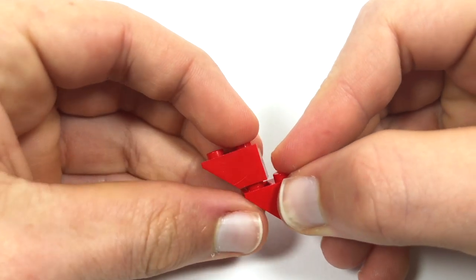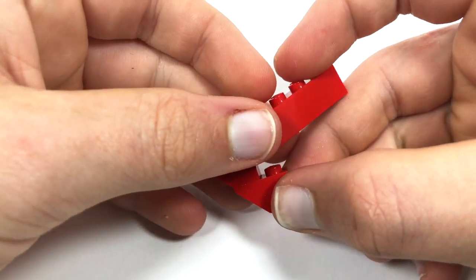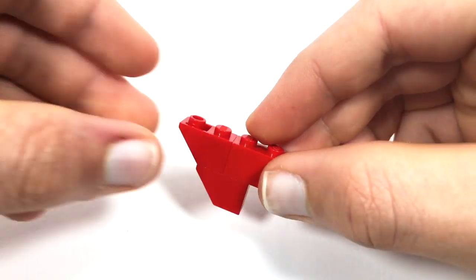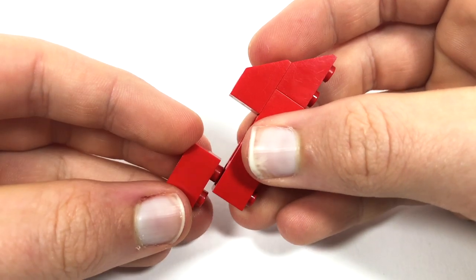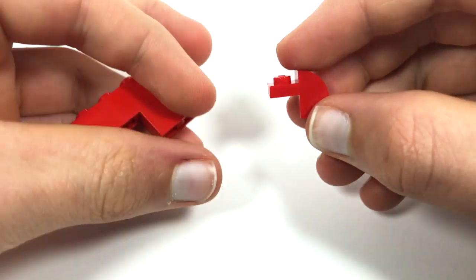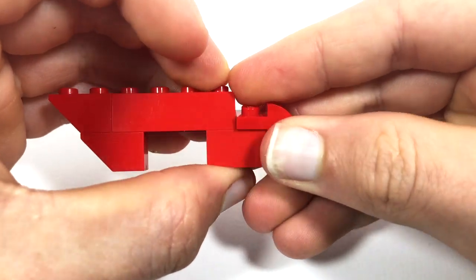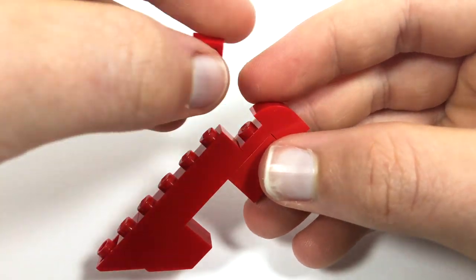The first step is to take two of these inverted slopes and fit them together just like that. Then you can fit on a 1x4 brick over here and a 1x2 brick just below. Then you can go ahead and fit on one of these slopes followed by a 1x1 plate just like this.